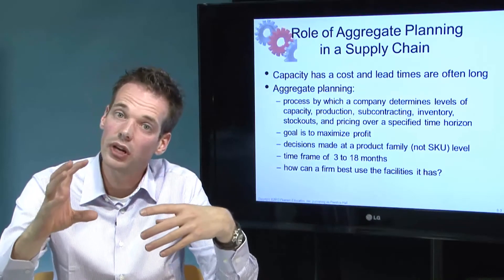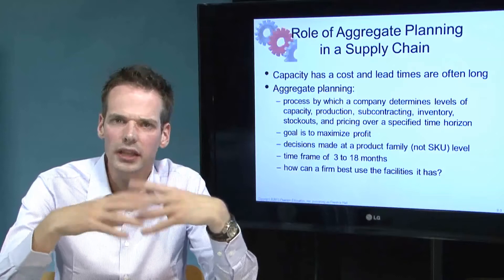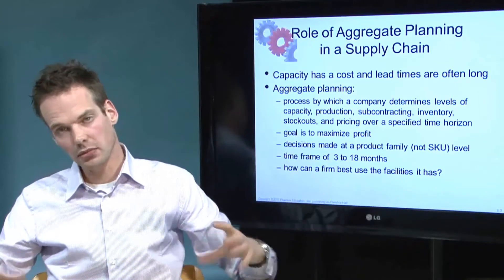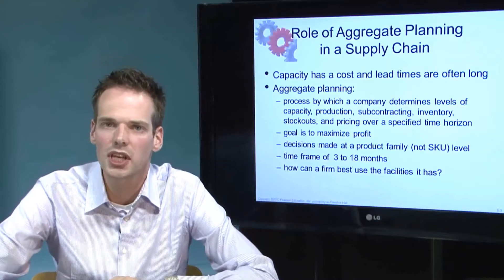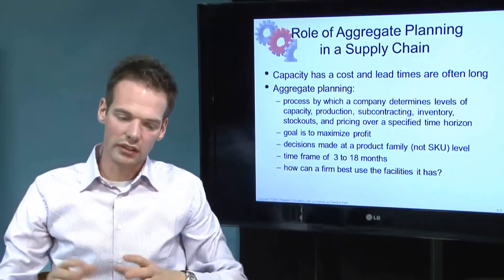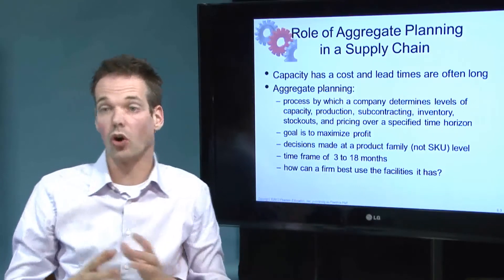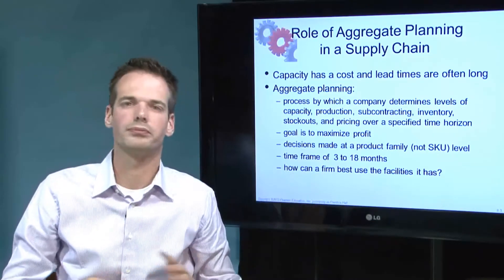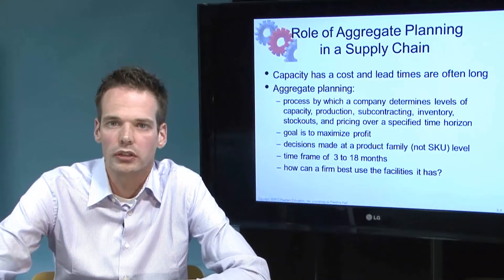When producing an aggregate plan, it is best to do that over some time — typically 3 to 18 months. It is important to establish the period unit: whether it is weeks, months, or quarters. You can use all of those options.